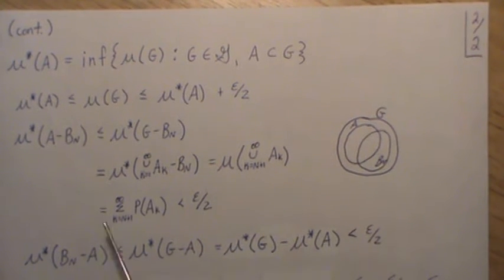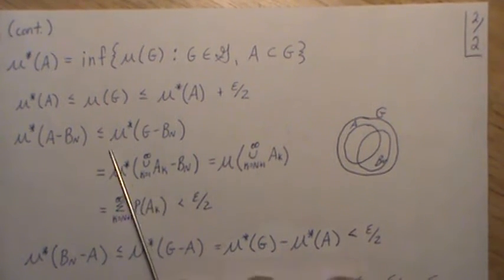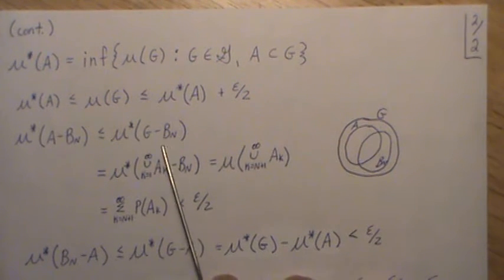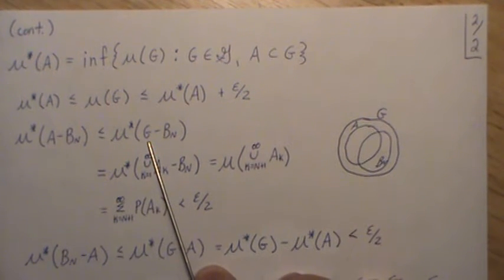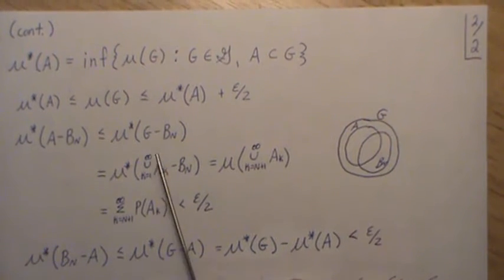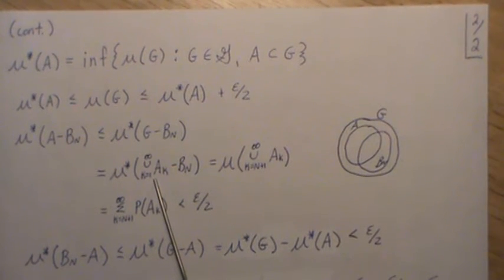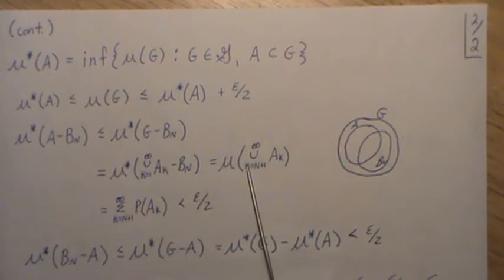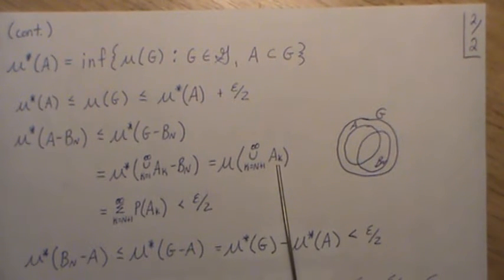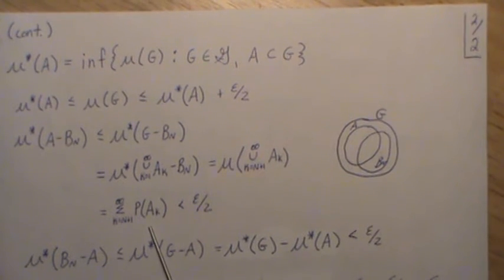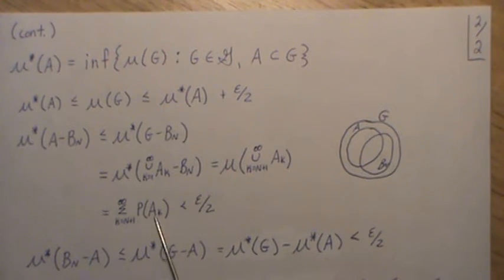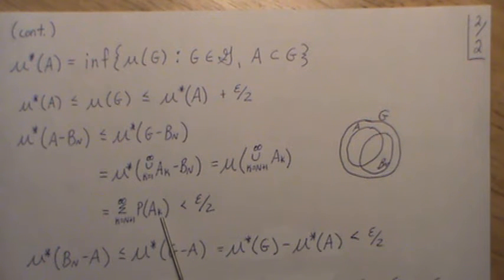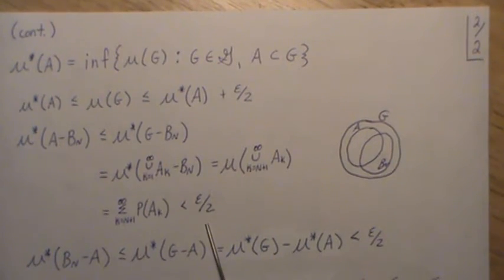So now let's look at μ*(A - B_N). And that is less than or equal to μ*(G - B_N), because G is a larger set than A. Now, G is this infinite sum. But this difference is actually, so we just take off the first capital N. It's the union of N plus one to infinity. But all these are disjoint. So that's the infinite sum. But we can call it P because each of these is part of the field. And we said by definition, that's less than or equal to epsilon over two.